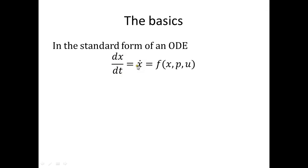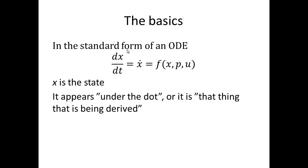This derivative, x-dot, is given by some function which depends on various things. If we have it in this standard form of an ODE — this state space form — then the states simply are x. They are given by the vector x. In words, the states are the things that appear under the dot, or the things that are being derived — those are the states.